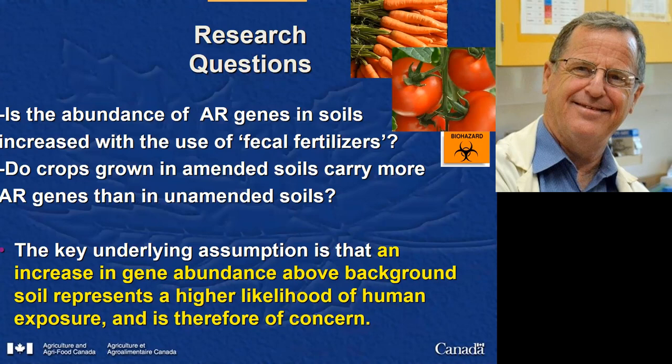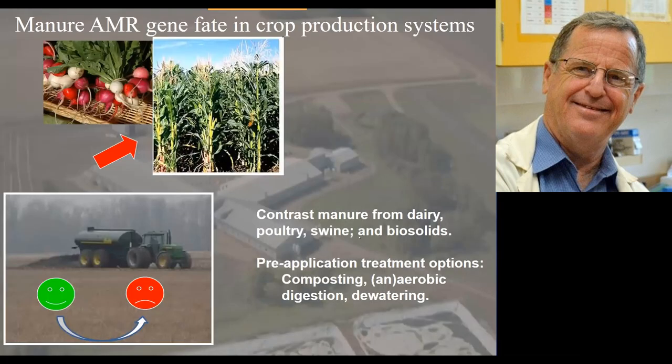The key underlying assumption is that an increase in gene abundance above background represents a higher likelihood of human exposure to antimicrobial resistance. We've done field work looking at how persistent bacteria and the genes they carry are in these systems — is the window of concern big or are they destroyed immediately? We've looked at transfer of various things to crops, working with manure from dairy systems, poultry, swine, and humans, and a variety of different treatment options.